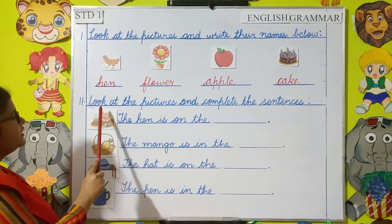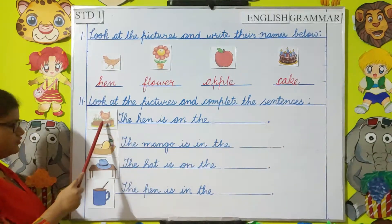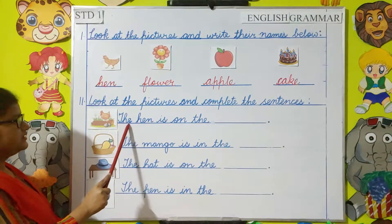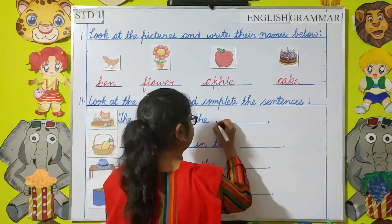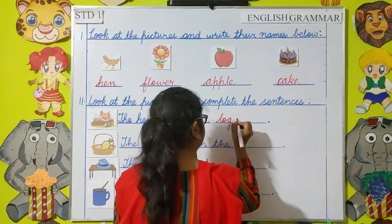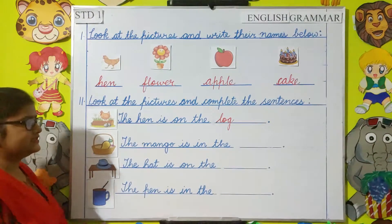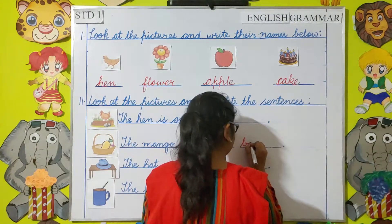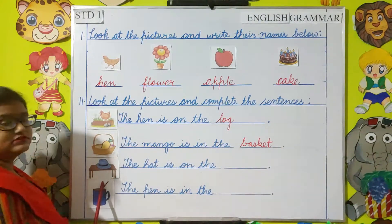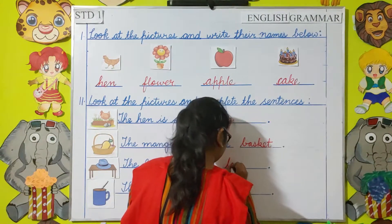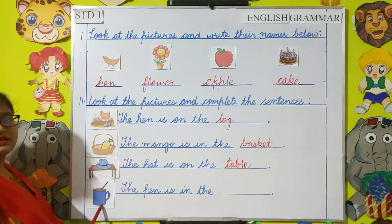Now the next question: look at the pictures and complete the sentences. You have to look at the pictures and then complete the sentences. First one: the hen is on the log. Next: the mango is in the basket. The hat is on the table. The pen is in the mug.